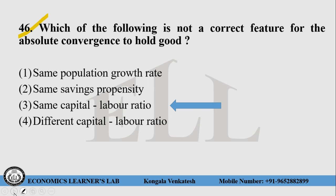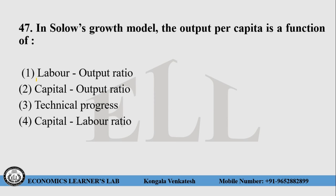Question number 47: In Solow's growth model, the output per capita is a function of: choice 1 — labor output ratio, choice 2 — capital output ratio, choice 3 — technical progress, choice 4 — capital labor ratio. The right answer is choice number 4, that is capital labor ratio.